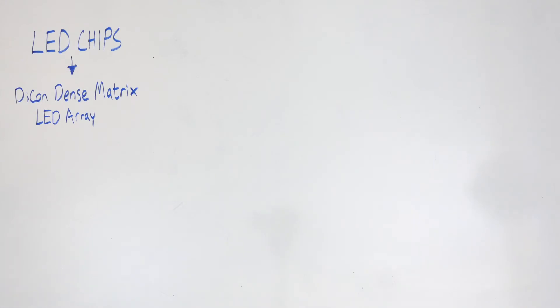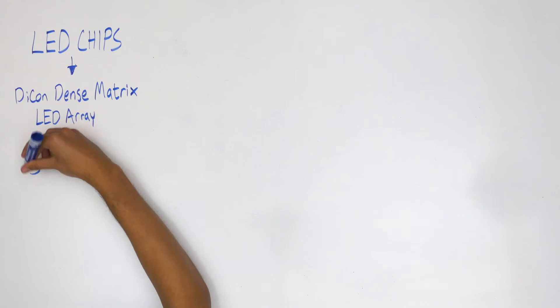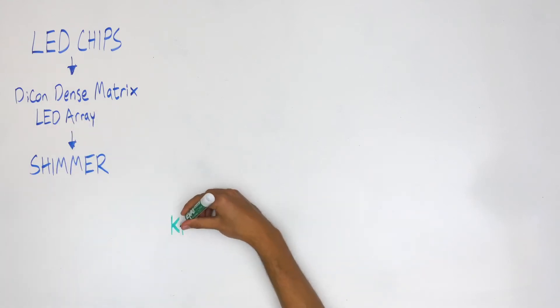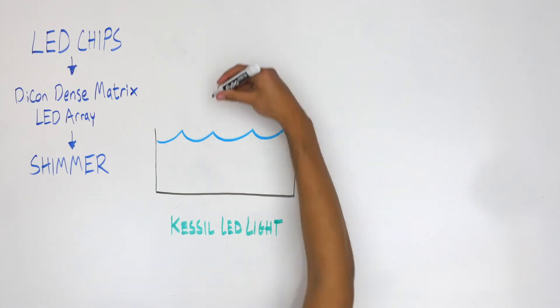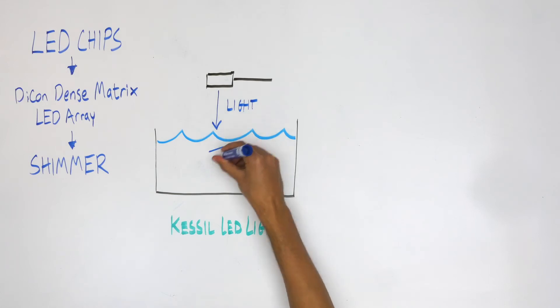As we just said, the Dense Matrix LED array gives more control over the emitted light. Perhaps the most amazing product of this in Kessel Aquarium lights is the one-of-a-kind shimmer. The light from Kessel products, coming from a single, dense source, interacts with the surface agitation in an aquarium, much like how the sun, also a single source, interacts with waves on the ocean.